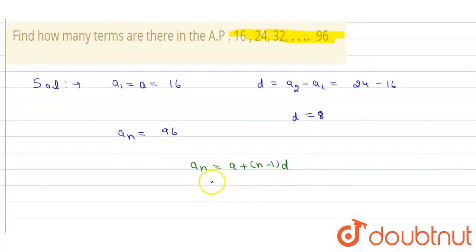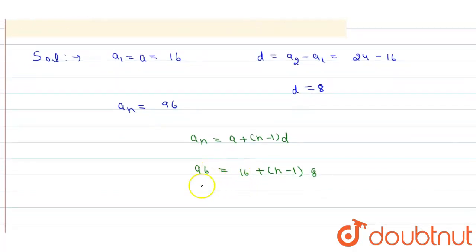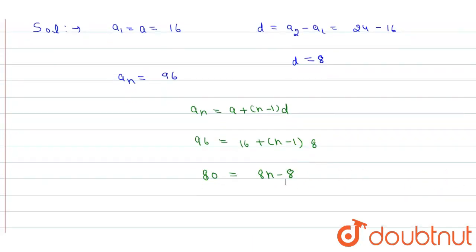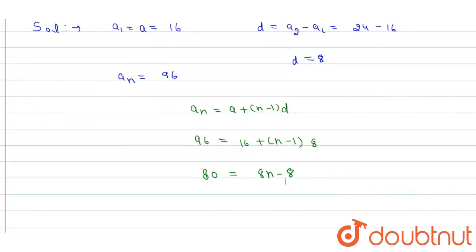So, An which is 96, equals A plus (n minus 1) times D. Substituting the values, 96 equals 16 plus (n minus 1) times 8. Simplifying, we get 80 equals 8n minus 8.